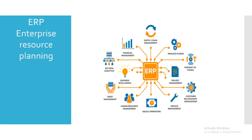What is ERP? ERP stands for Enterprise Resource Planning. SAP is an ERP software integrated with different types of modules covering business processes such as supply chain management, manufacturing, internet of things, project management, customer relationship management, service management, sales and marketing, human resource management, asset management, business intelligence, big data analytics, and finance management.